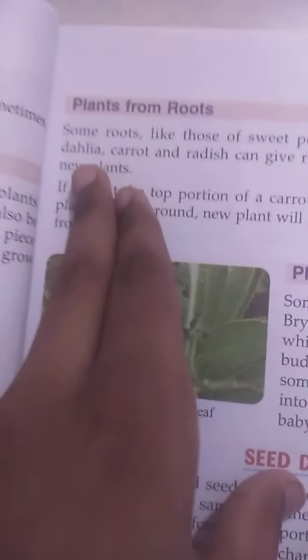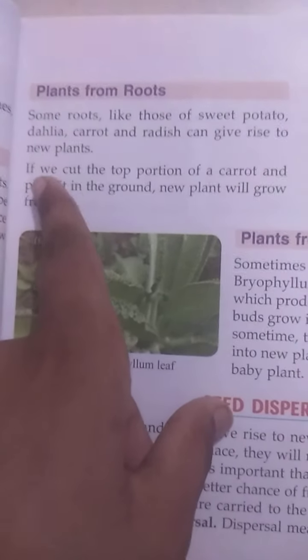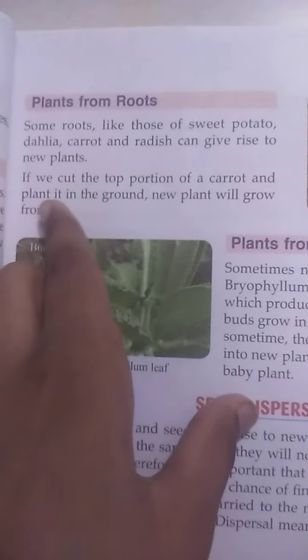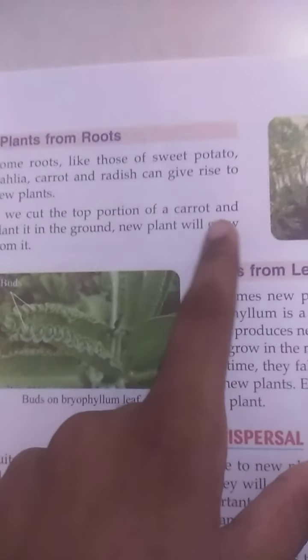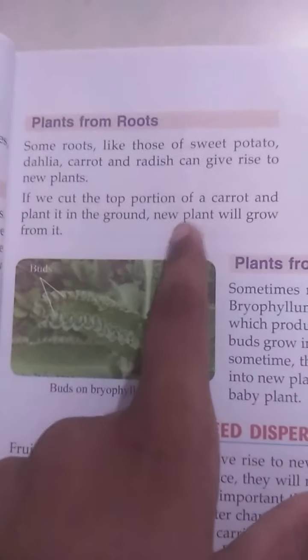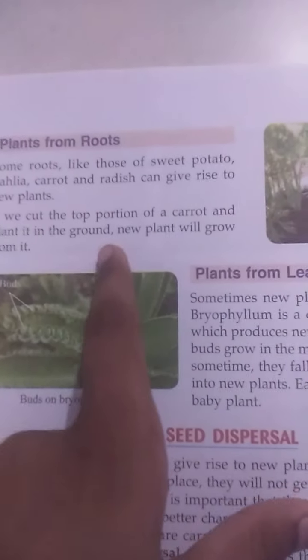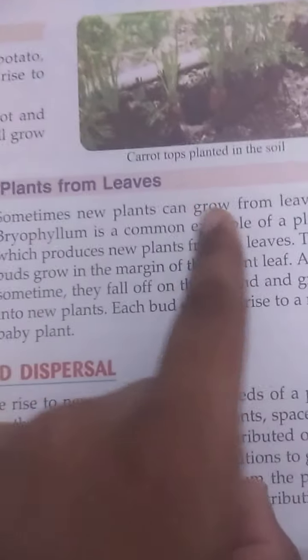Plants from roots: some roots, like those of sweet potatoes and carrots, can give rise to a new plant. If we cut the top portion of a carrot and plant it in the ground, a new plant will grow from it.